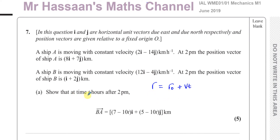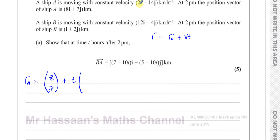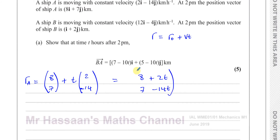For ship A, I'll write the position vector as a column vector. The initial position is 8i + 7j, written as (8, 7), plus time t times the velocity vector 2i − 14j, written as (2, −14). Combining, the i component is 8 + 2t and the j component is 7 − 14t. Be careful — it's 2i minus 14j, so it's 7 minus 14t. That is the position vector of A.